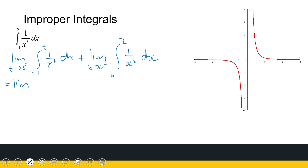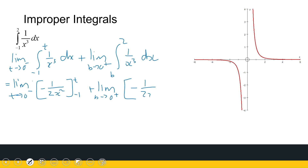So what we have is the limit as t approaches 0 from the negative side. The antiderivative of x to the power minus 3 is minus 1 half x to the power minus 2, or 1 over minus 2x squared, evaluated between t and minus 1. If I substitute minus 1 in, that becomes 1, so it becomes plus 1 half.